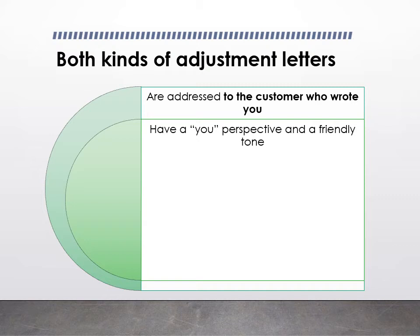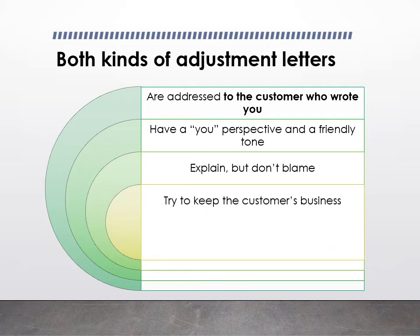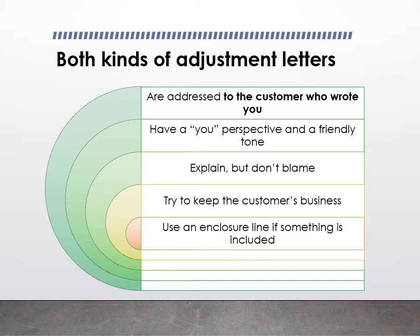Use a friendly and positive tone. Don't blame the customer. Explain things — especially if you have to refuse — but don't blame. Don't blame your own people either. Explain what went wrong but don't make it look too bad. Do something to try to keep the customer's business. Even if you have to refuse the claim, look for what you can do for them. If you're enclosing anything — a copy of the contract, the warranty, a gift certificate — make sure your letter has an enclosure line.